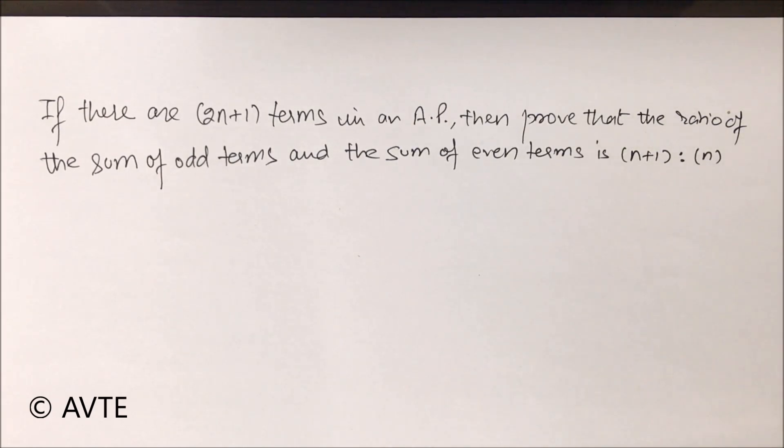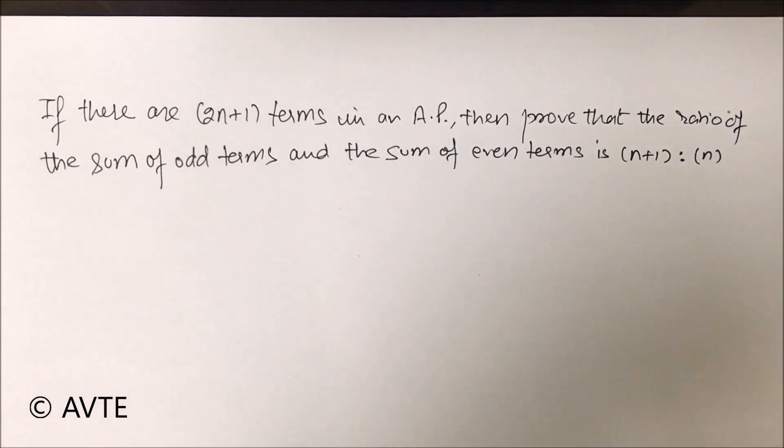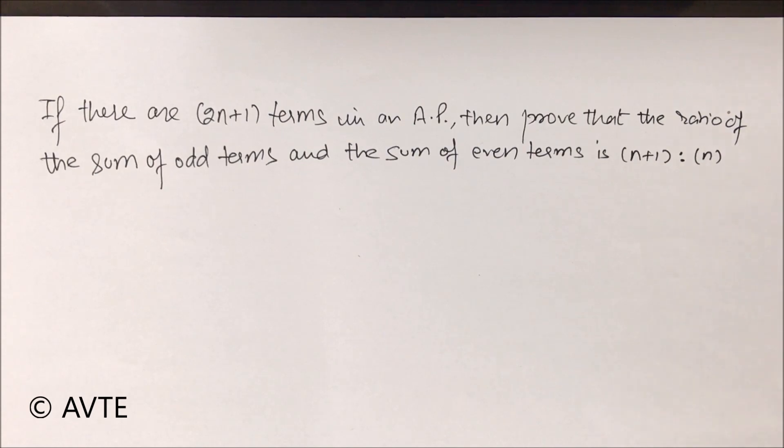Well there are 2n plus 1 terms, so clearly these are odd terms. If we have five terms in an AP, then three terms will be odd and two terms will be even. So here, because there are 2n plus 1 terms, clearly n plus 1 terms will be odd and n terms will be even terms.